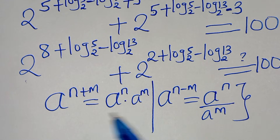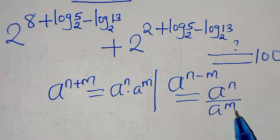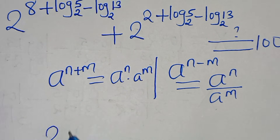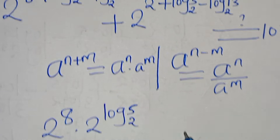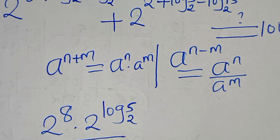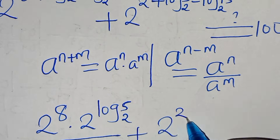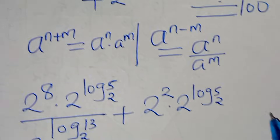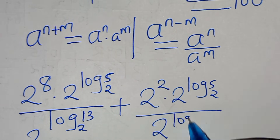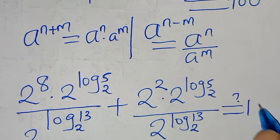Applying these two exponent properties: we have 2^8 multiplied by 2^(log_2(5)) divided by 2^(log_2(13)), plus 2^2 multiplied by 2^(log_2(5)) divided by 2^(log_2(13)). This should give us a value of 100.